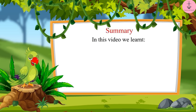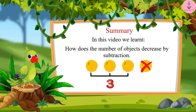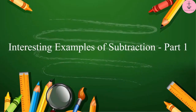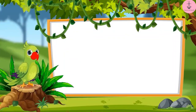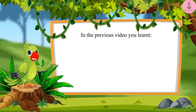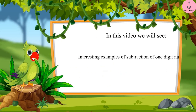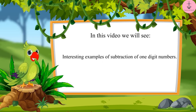That's all for today. In this video, we learned how the number of objects decreases by subtraction. In the next video, we will see some more interesting examples of subtraction. Till then, bye friends. In the previous video, you learned how the number of objects decreases by subtraction. In this video, we will see some interesting examples of subtraction of one-digit numbers.